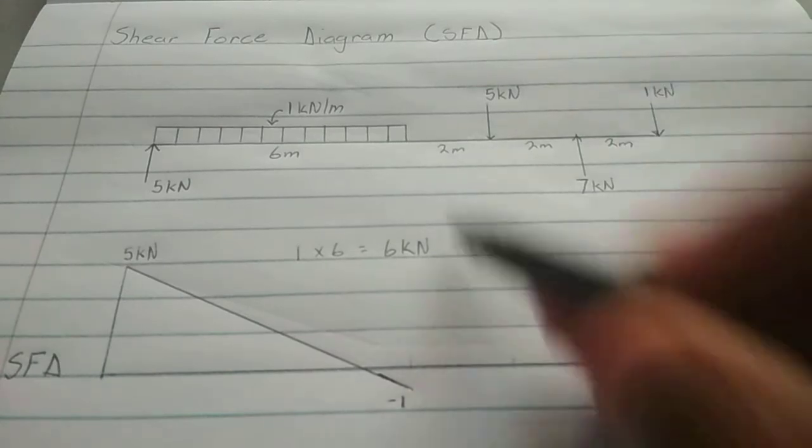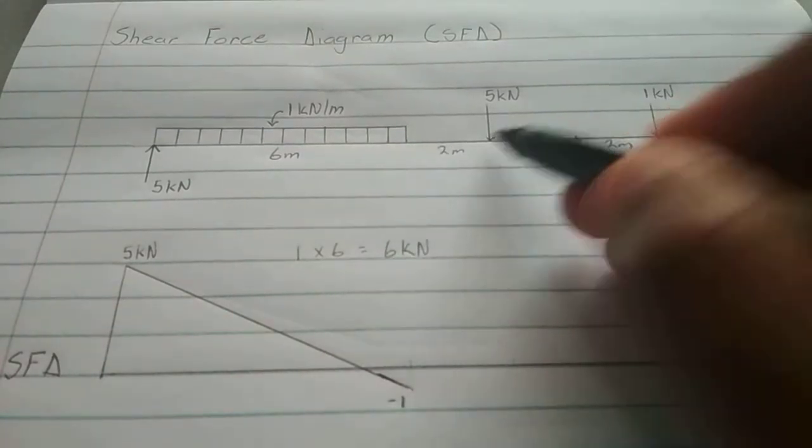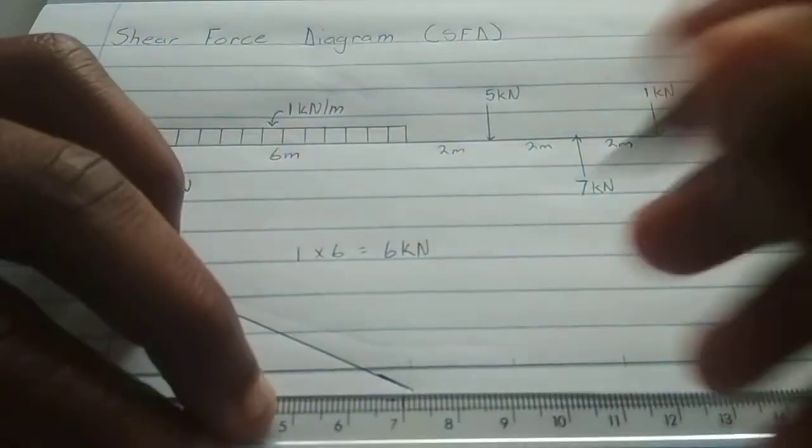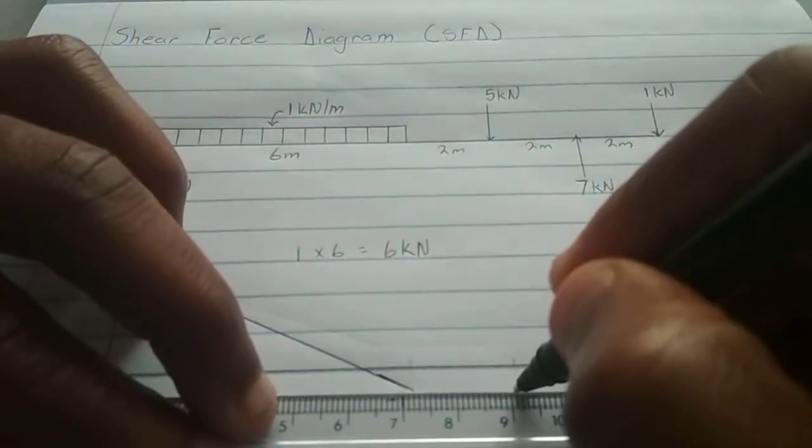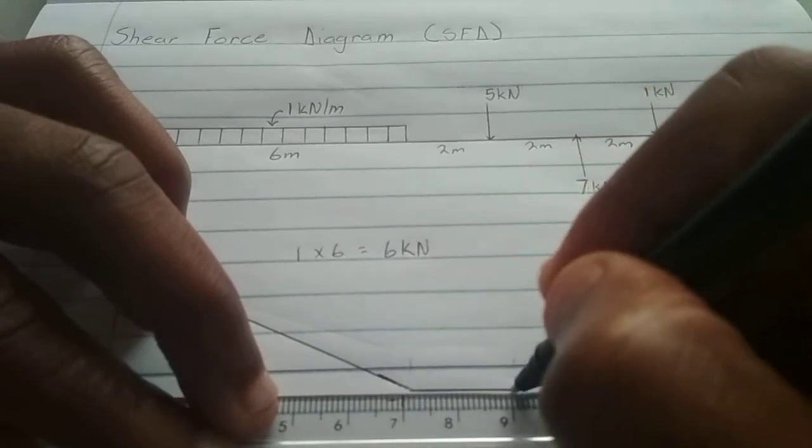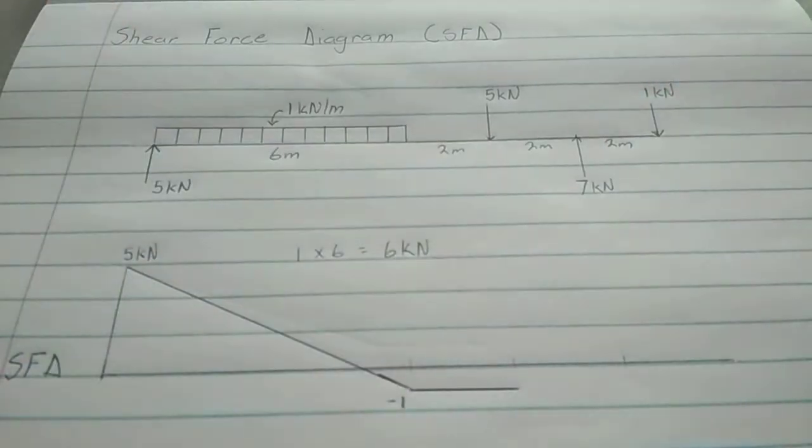The UDL always moves diagonal when it comes to the shear force diagram. Let's just complete that. Right, so we are at minus 1. Okay, at this pace from here to here, there is nothing there. So we just move right across the horizontal line. We are constant. There is no movement.